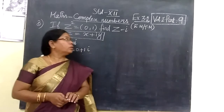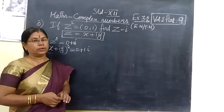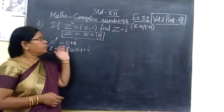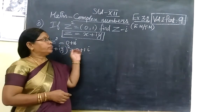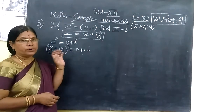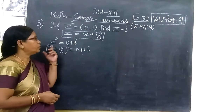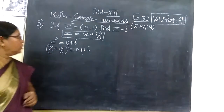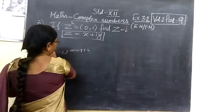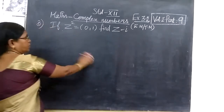Good morning to all. We want to see part 9 in volume 1, and this is for complex numbers. The second name is complex number. In part 8, we have seen exercise 3.2, first sum and second sum. Now we are going to start the next sum. The question given is: z² = 0+1i. We have to find the value of z.